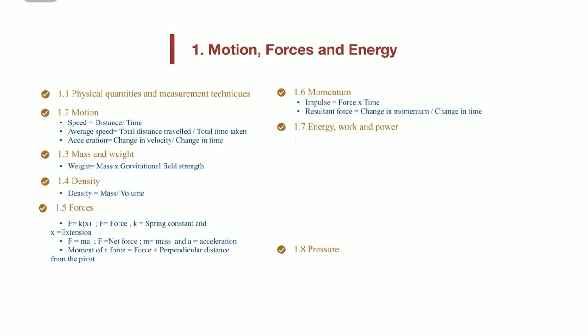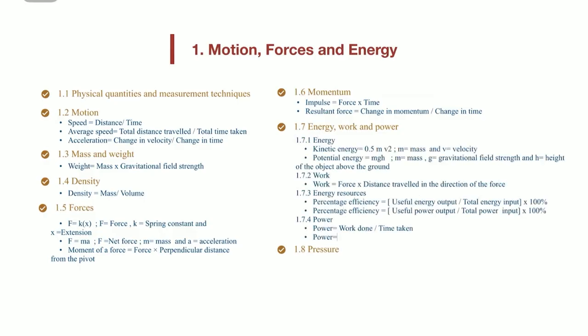Now moving into energy. When an object is in motion, it possesses kinetic energy. And when an object is in a position or height above the ground, it possesses potential energy. Kinetic energy is calculated by 1 over 2 times mass times velocity squared. And potential energy is calculated by mass, gravitational field strength which is 10 on earth, and height of the object above the ground.